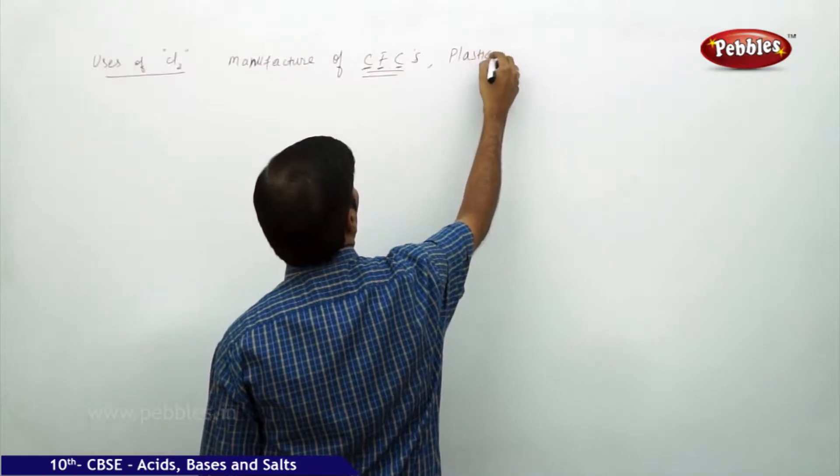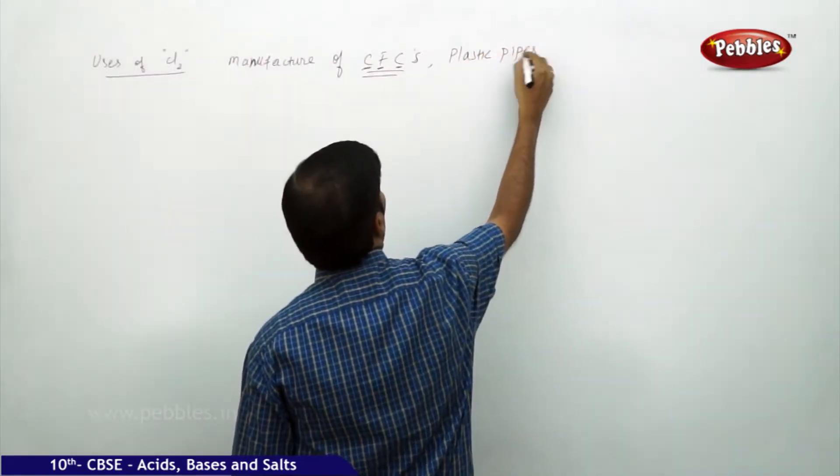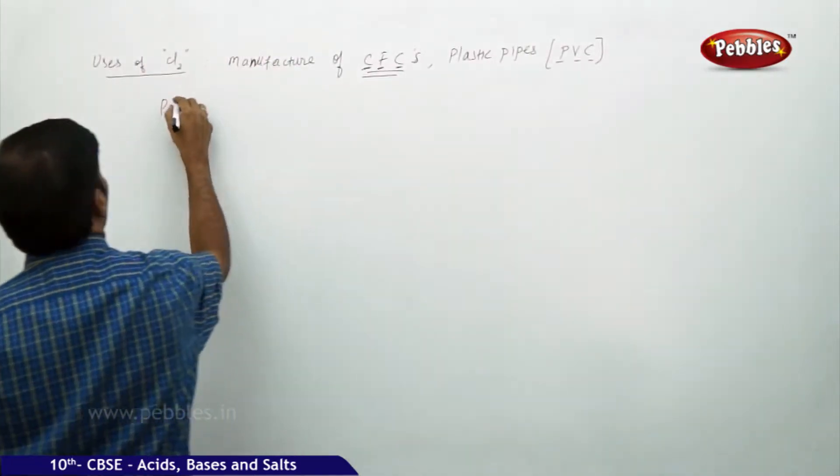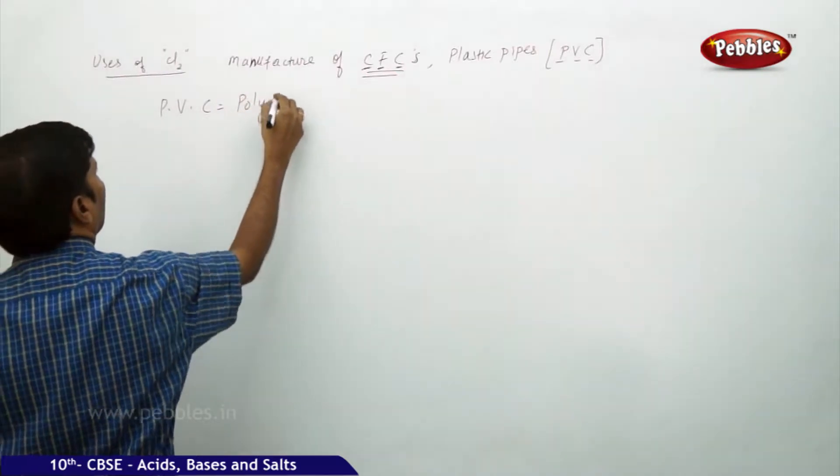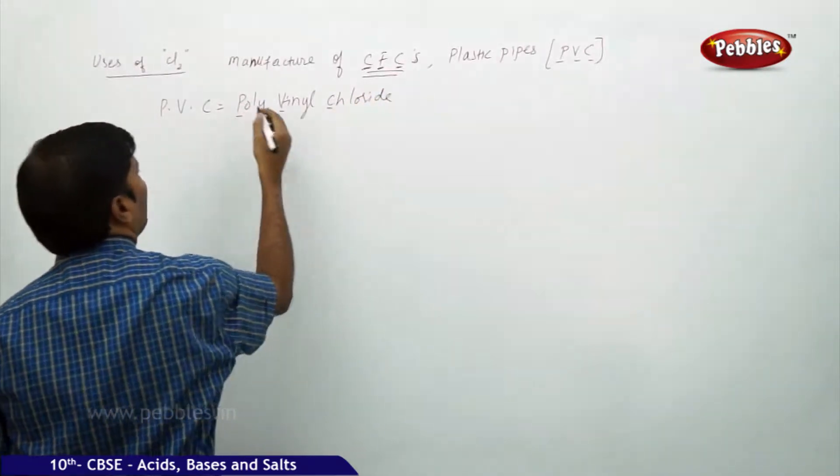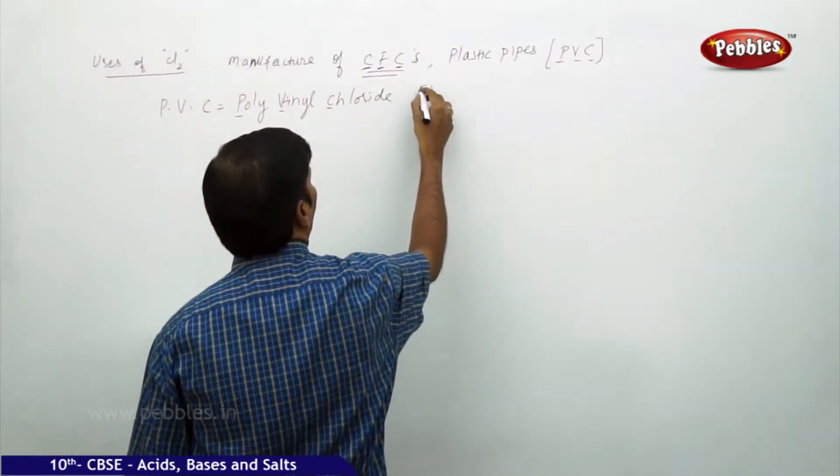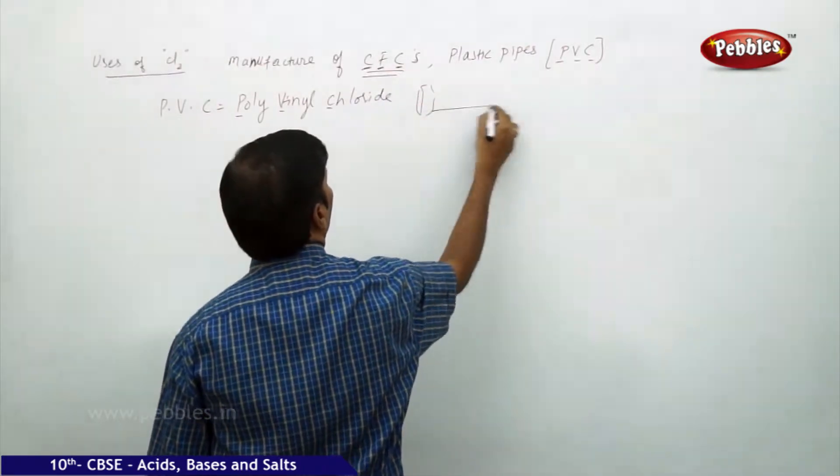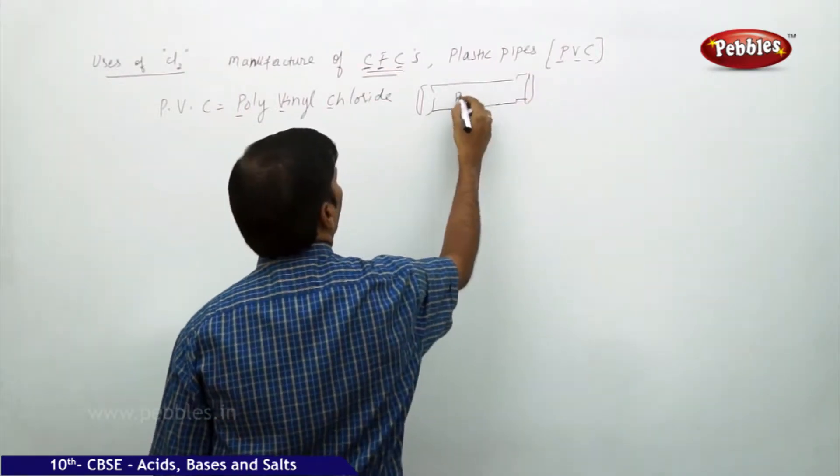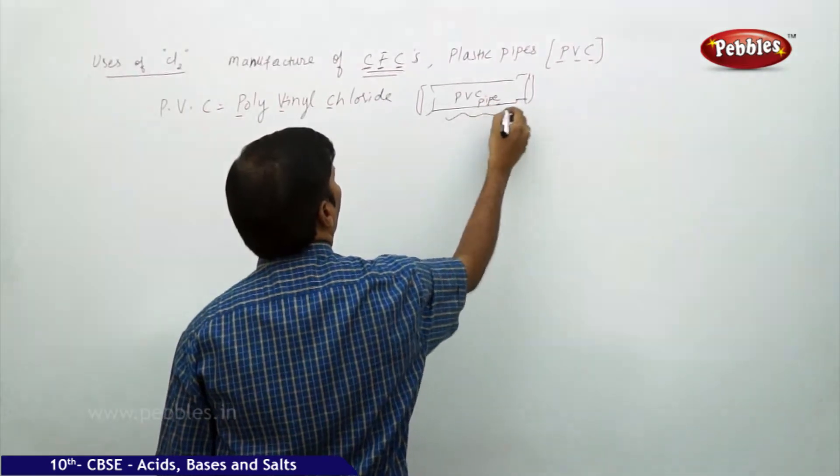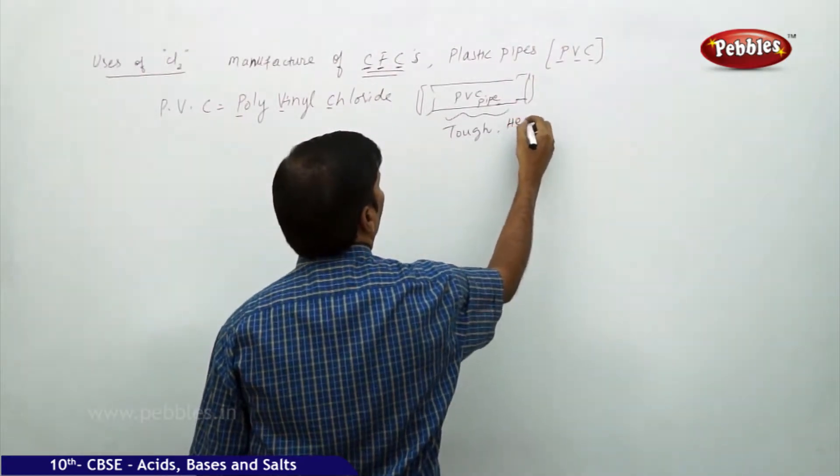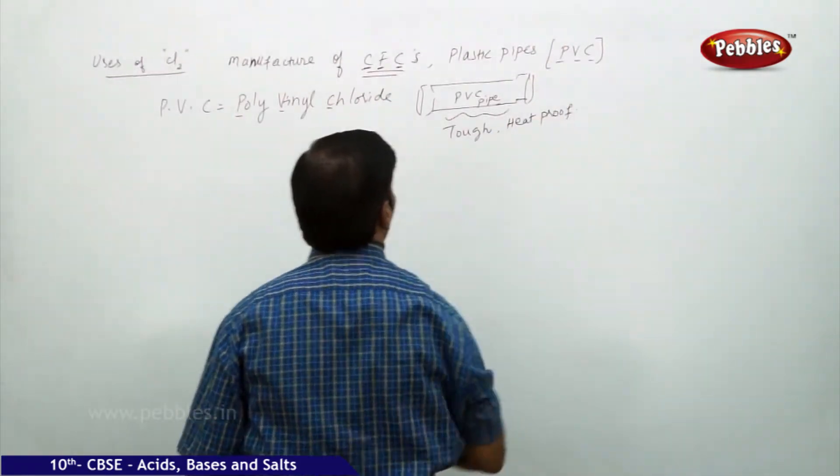It is also used in plastic pipes, that is PVC. We call this PVC as polyvinyl chloride. The pipes just look like this - these are the long agricultural pipes which we use. These are the polyvinyl chloride pipes, PVC pipes.